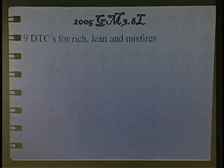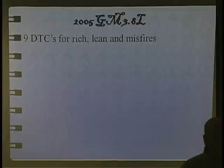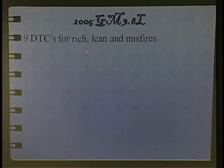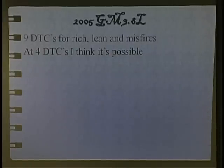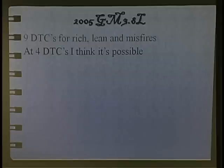We had a 2005 GM 3.8-liter with nine diagnostic codes for rich and lean conditions and misfires. The service writer comes running over. I said the car has rich and lean and misfire codes — okay, that's exciting. I honestly think four DTCs can be valid — I think we can store that many with four related or unrelated problems. I don't like nine. I don't think nine's right.